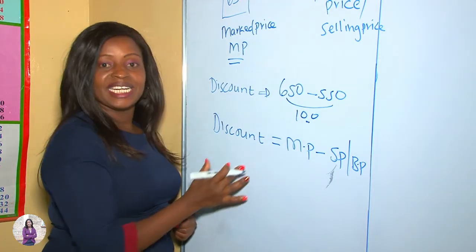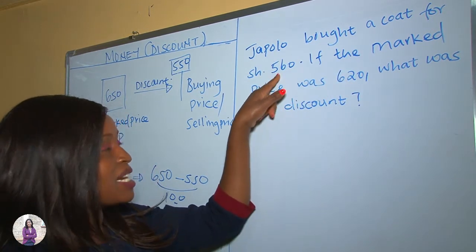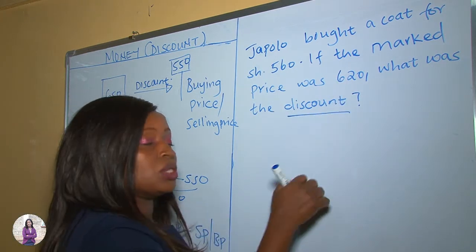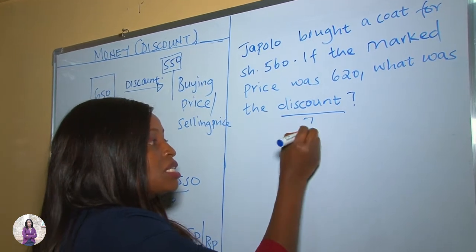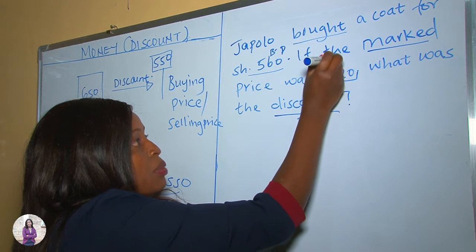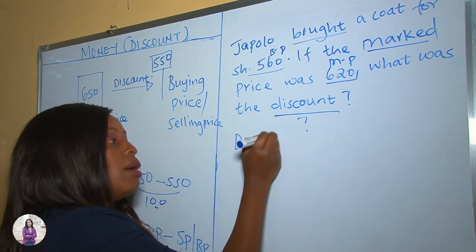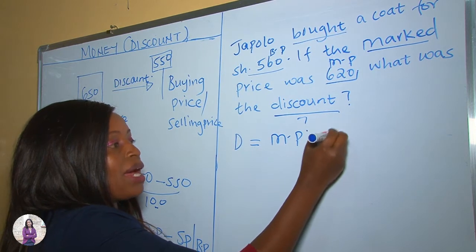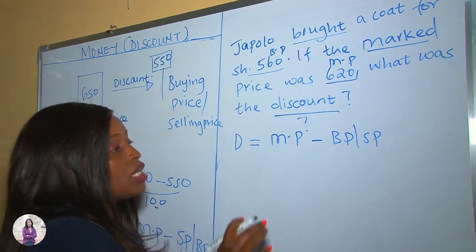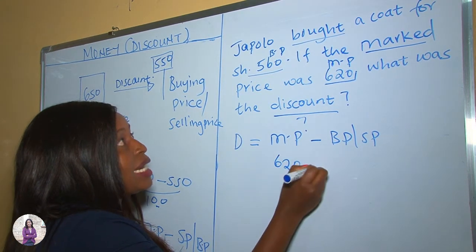Let's look at an example. Japolo bought a coat for 560 shillings. If the marked price was 620, what was the discount? We are being asked for the discount. The buying price is 560 and the marked price is 620. Applying the formula: discount equals marked price minus buying price, so it is 620 minus 560.